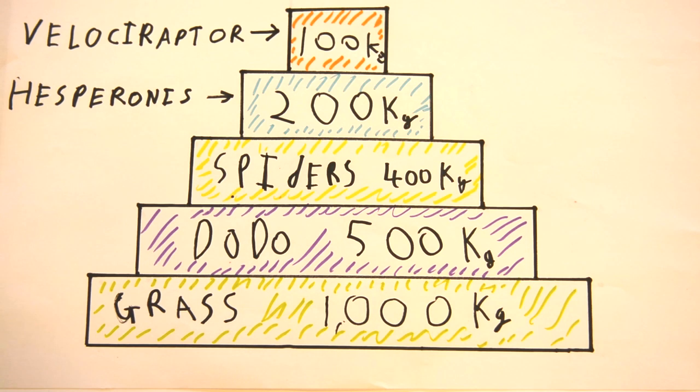And this is how we would draw it. As you can see, pyramids of biomass always get smaller as you go up the food chain, because, as you remember, energy is always lost at each level.